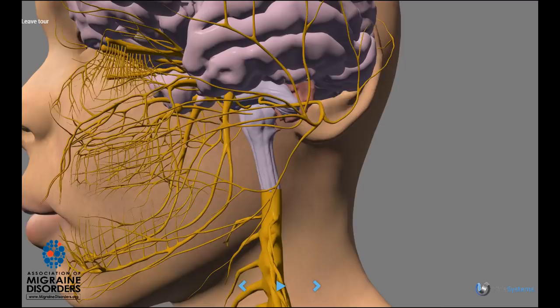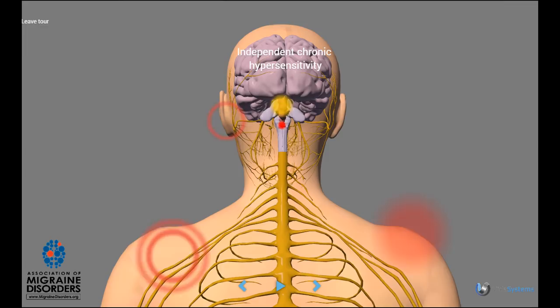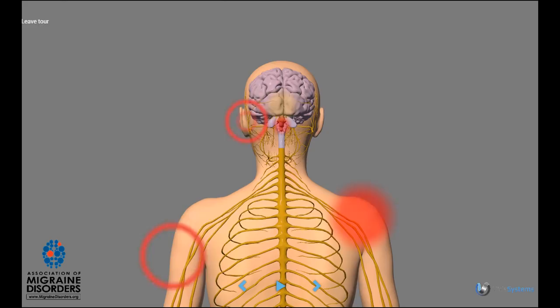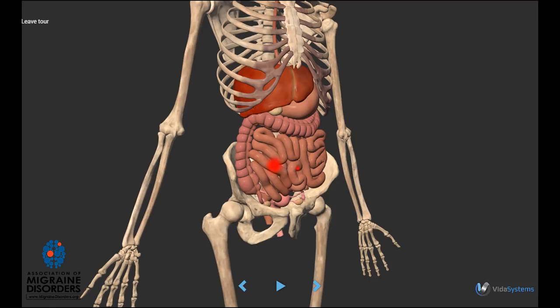For example, with cutaneous allodynia, a reduced threshold to touch during an acute migraine attack evolves into an independent chronic hypersensitivity. For some people, that means combing hair or wearing clothes becomes an everyday annoyance or pain. This biological phenomenon appears to affect more than the nerves controlling touch.